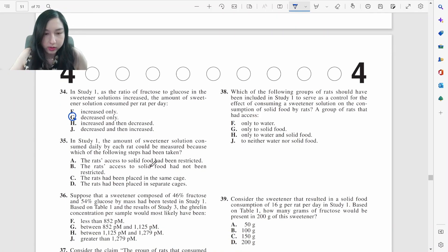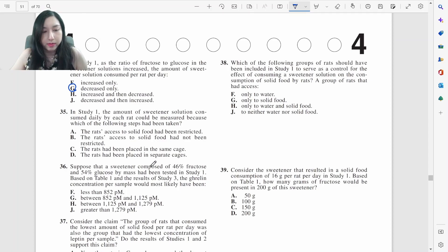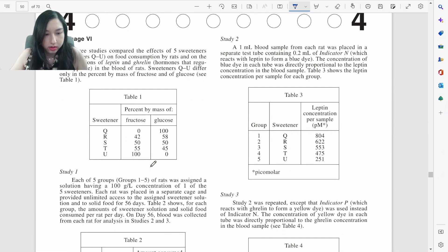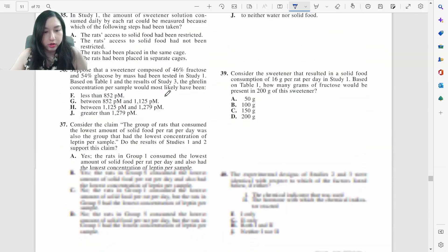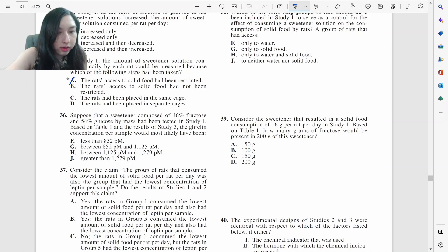In study one, the amount of sweetener solution consumed daily by each rat could be measured because of which of the following steps. Let me read this then. Five groups placed in this. Each rat was placed in a separate cage and provided unlimited access to the sweetener and to solid food. This is in a separate cage. So no, their food was not restricted. They were not placed in the same cage. So three B or D. And they want the amount of sweetener solution. Sweetener solution. And by each rat, B doesn't even talk about the sweetener solution. D is the only one that won't work.